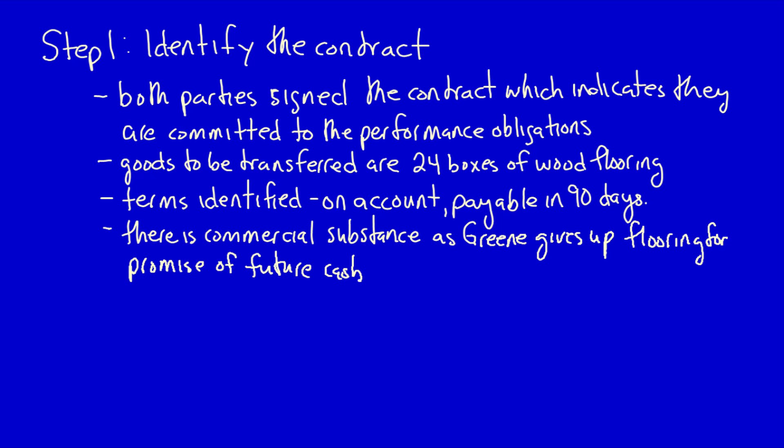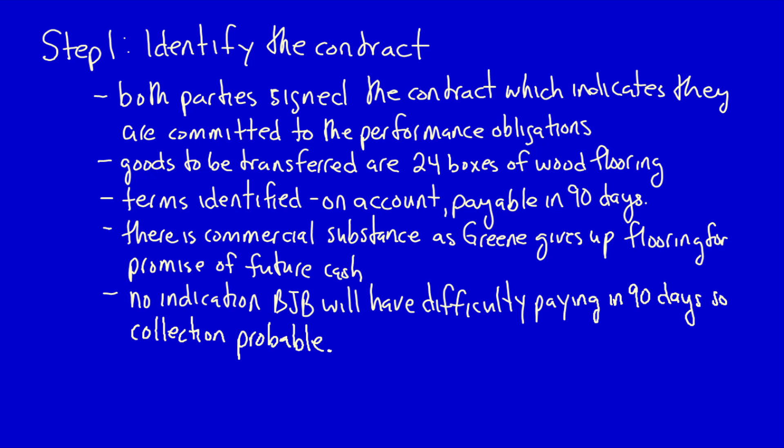And finally, collection is probable because there is no indication that BJB will have difficulty paying at the end of the 90 days. In addition, it's not like Green would have signed a contract with BJB if they didn't think BJB could pay. All the criteria are met, so there is a contract.